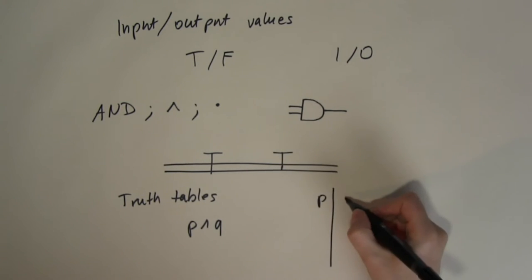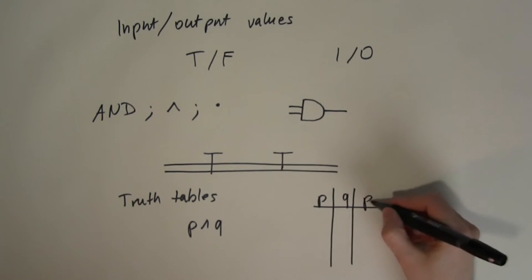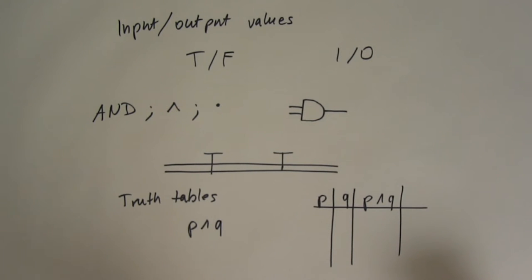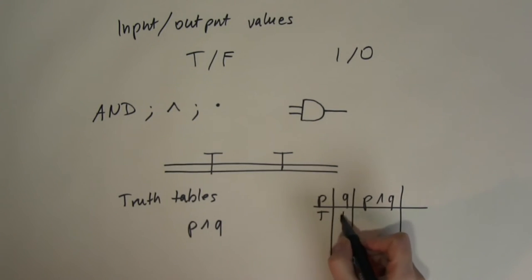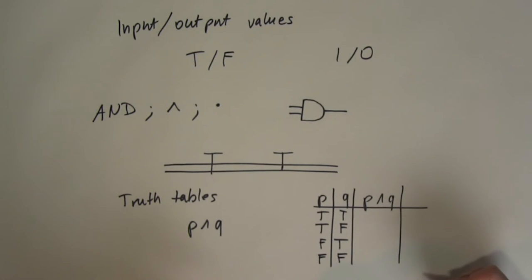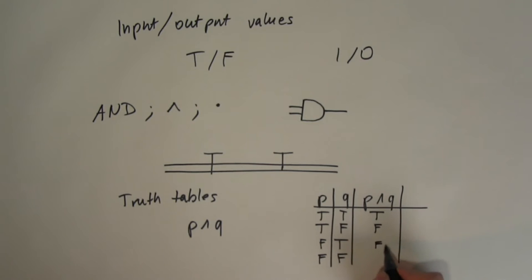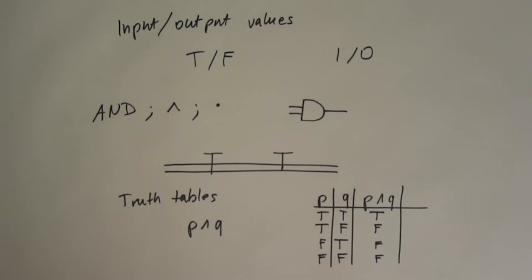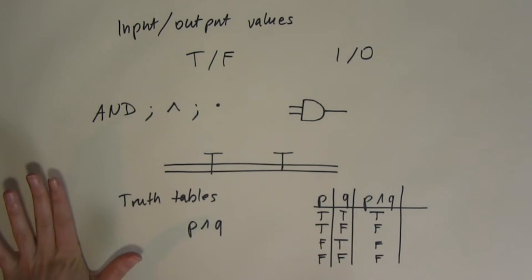The two taps can be in four combinations: both on, one on and one off, the other combination, or both off. The water can only flow through if both taps are on — every other combination stops the water. This is the truth table for the AND operation. You need to know and understand these truth tables, because later we will combine more than one operation together and see what happens when we mix them up.